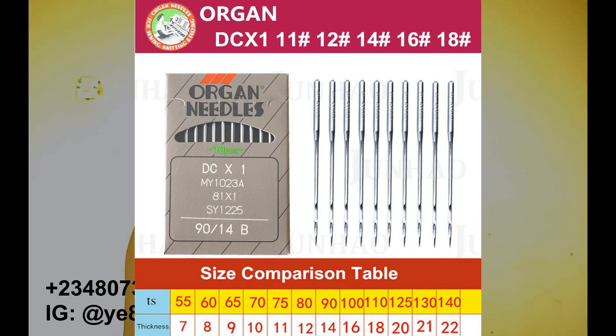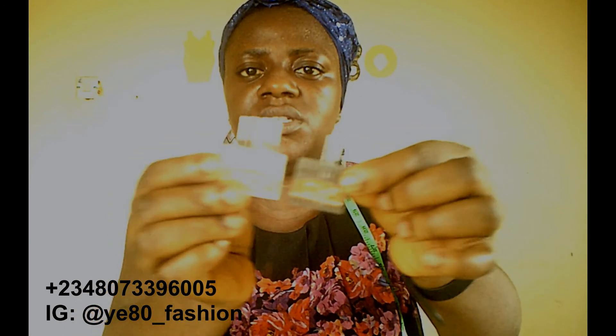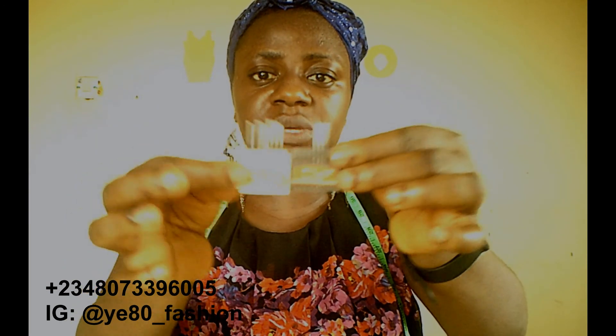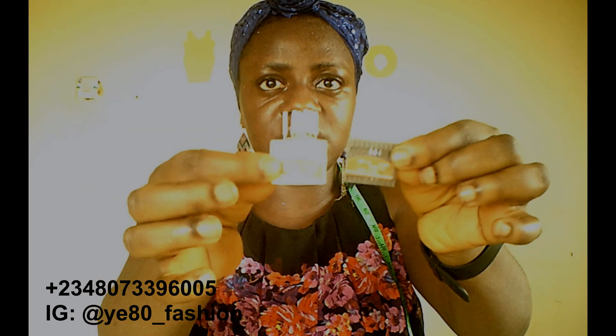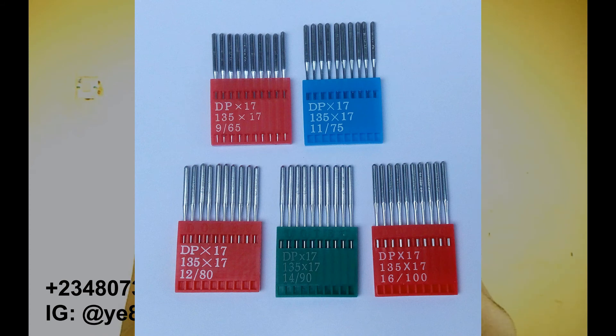The last one is the universal needle. These ones always come in plastic packs and you have the thread. You have the DP version, the HA version, and the DC version. These ones are stronger than the regular ones and a little more expensive. So if you're making something that has stones, sequins, or the fabric is very hard, you should use the universal needle. You should have your DP, your HA, and your universal, depending on what you're doing.